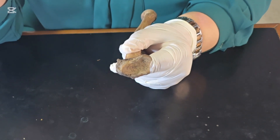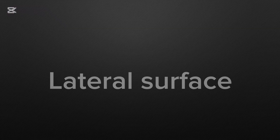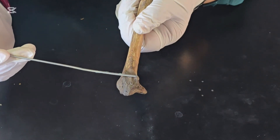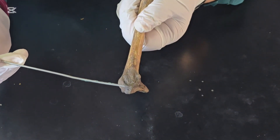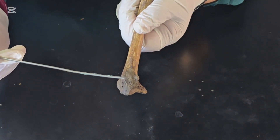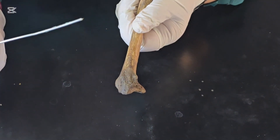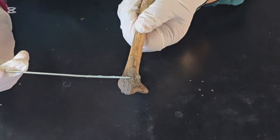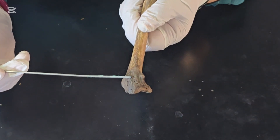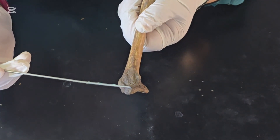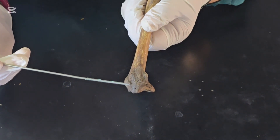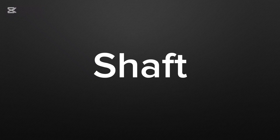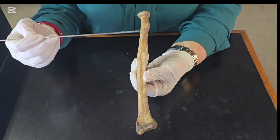The lateral surface bears a prominent downward projection called the radial styloid process, which can be palpated on the floor of the anatomical snuffbox. The brachioradialis and radial collateral ligament are attached to the styloid process. The styloid process of the radius is longer than its ulnar counterpart.